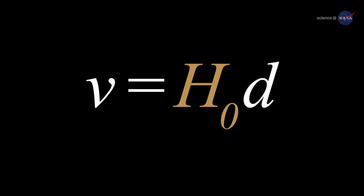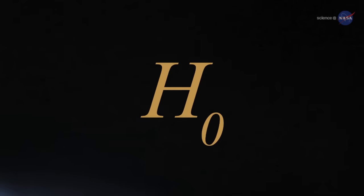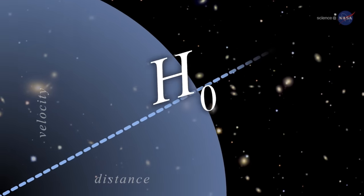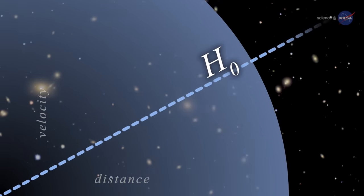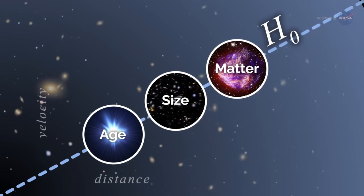But before the Hubble Telescope was launched, there was a huge uncertainty over the expansion rate of the universe, or Hubble constant. This value is needed to calculate the age of the universe, estimate its evolution over billions of years, and understand the forces driving it.